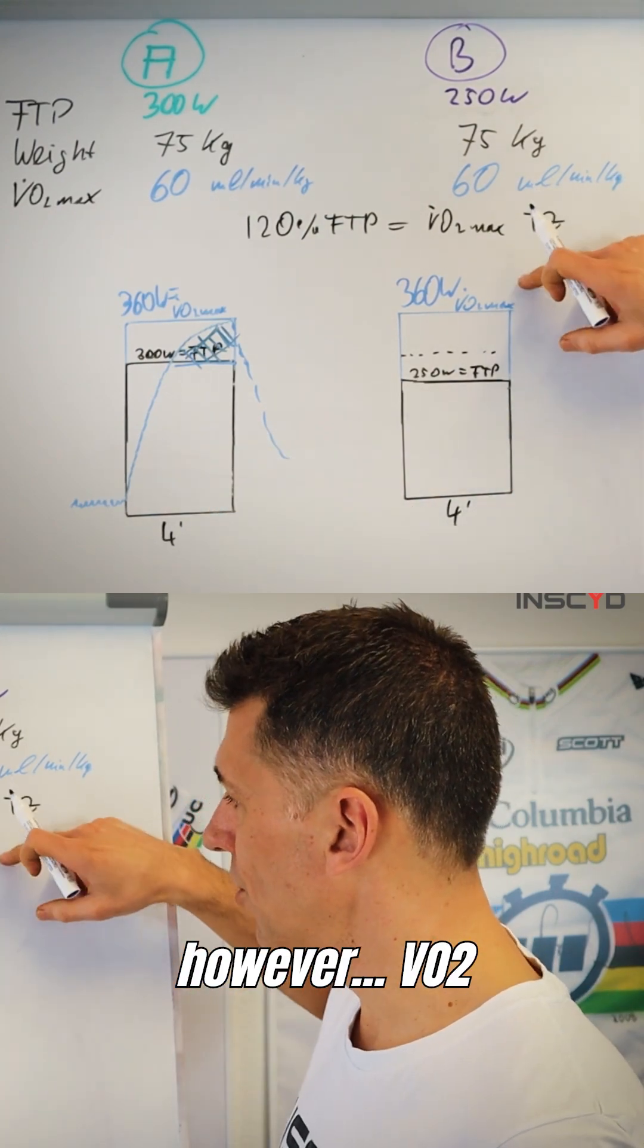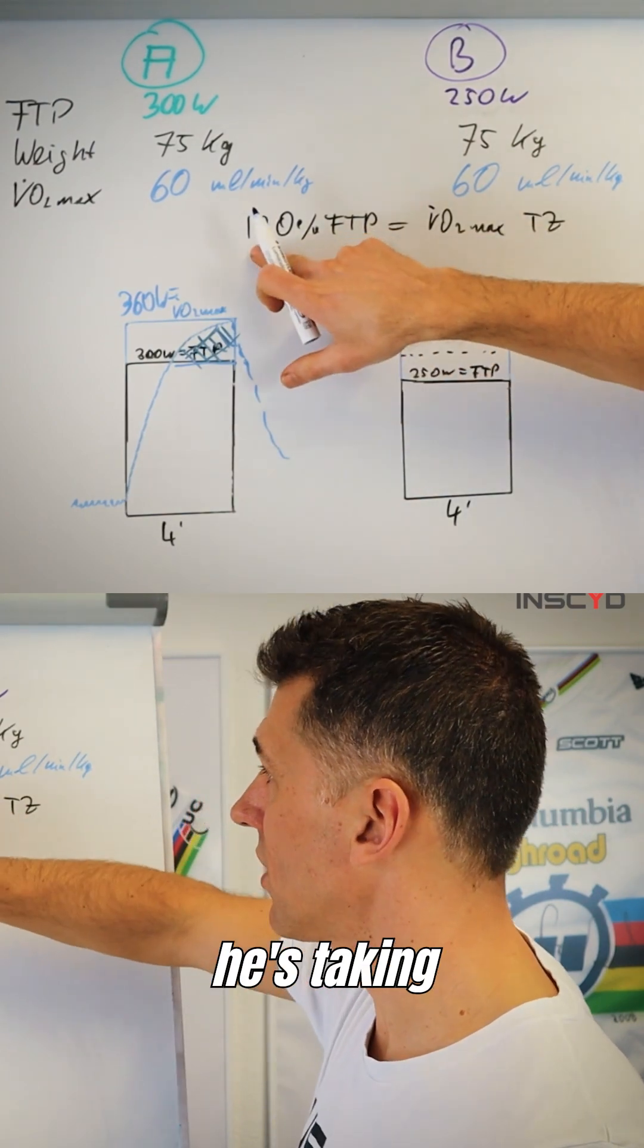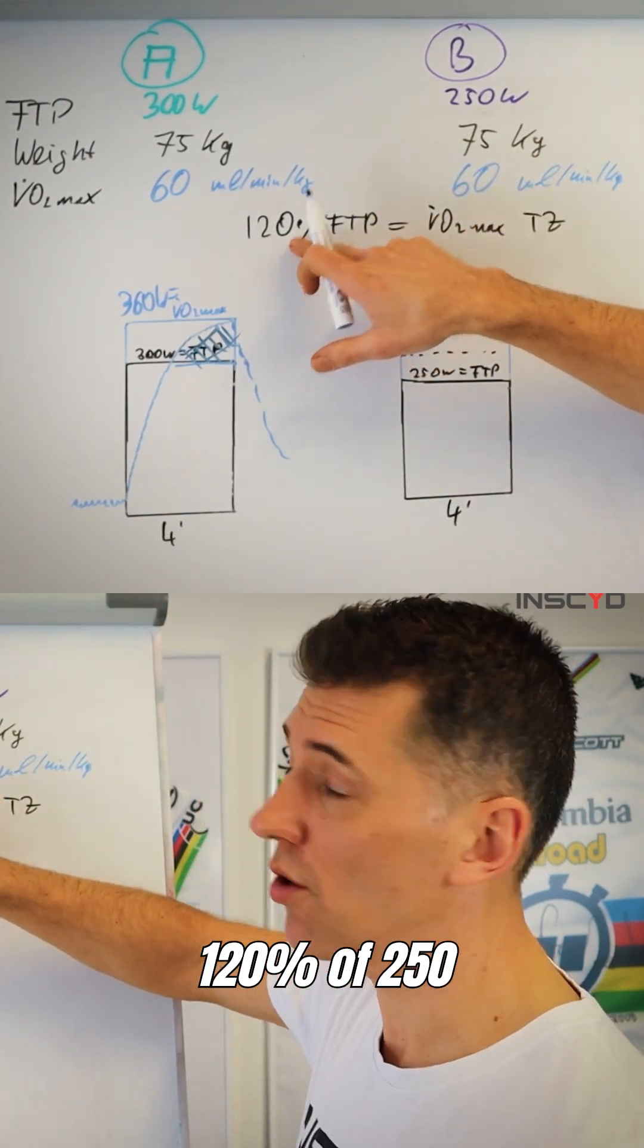At a B, however, VO2max is 160 watts. He's only exercising at 300, because he's taking 120% of 250 watts.